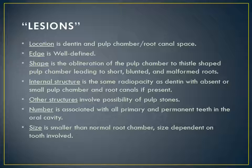The lesion acronym analysis: Location is dentin and pulp chambers and root canal space. The edge is well defined. Shape involves obliteration of pulp chambers to thistle-shaped pulp chambers, leading to short, blunted, and malformed roots. Internal structure has the same radiopacity as dentin with absent or small pulp chambers and root canals if present. Other structures include the possibility of pulp stones. Number is associated with all primary and permanent teeth in the oral cavity. Size is smaller than normal root chamber, size dependent on tooth involved.